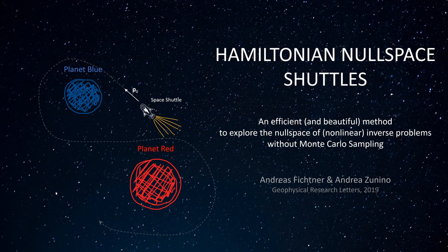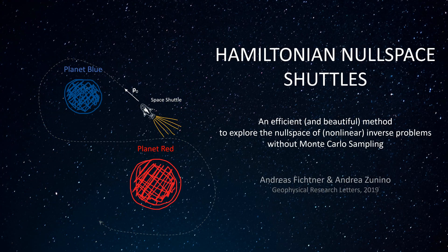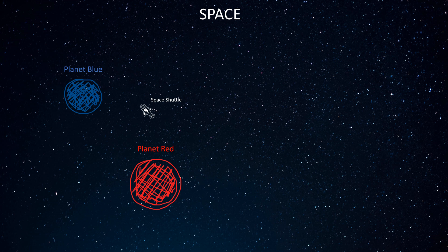To illustrate the concept, we start in a cartoon space where a space shuttle explores the neighborhood of planet red and planet blue. When the shuttle is at rest, it has a potential energy u determined completely by its initial position x0 within the planet's gravitational field.